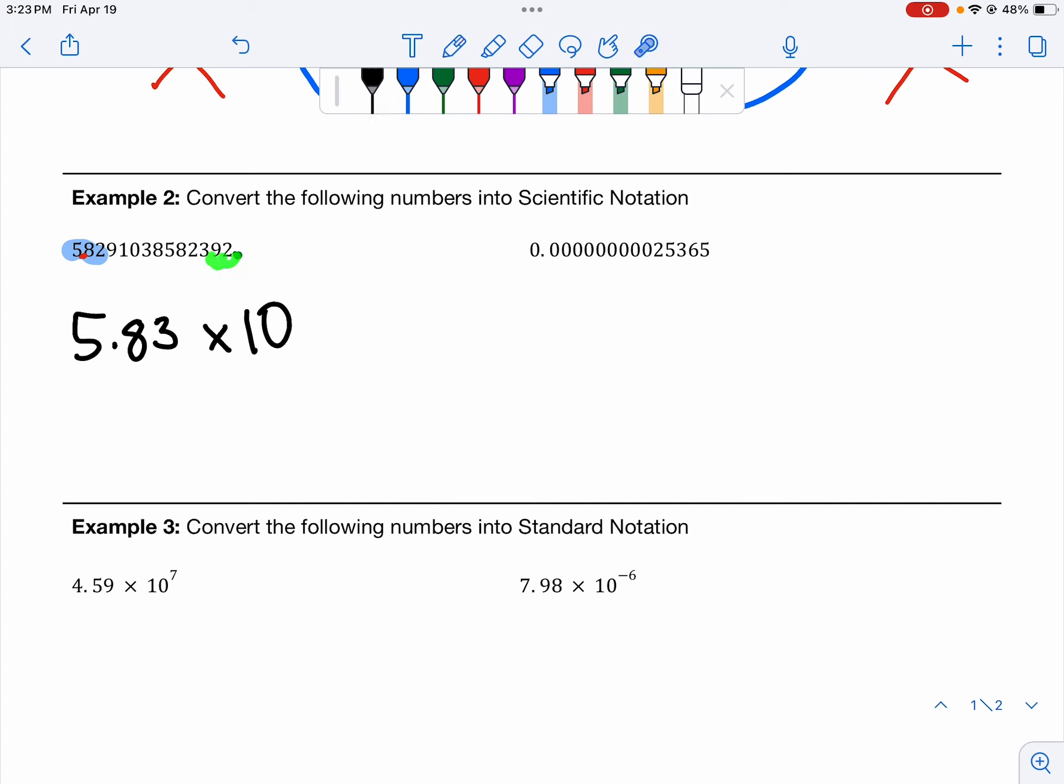So let's go ahead and count this. 1, 2, 3, 4, 5, 6, 7, 8, 9, 10, 11, 12, 13. So our exponent is 13 because we have moved it 13 times.